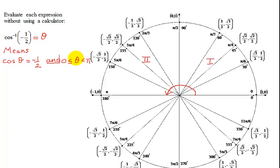So those are the inherent restrictions built into the inverse cosine function. So remember, the cosine of an angle is equal to the x-coordinate on the unit circle, so that means I'm looking for an x-coordinate of negative one-half.